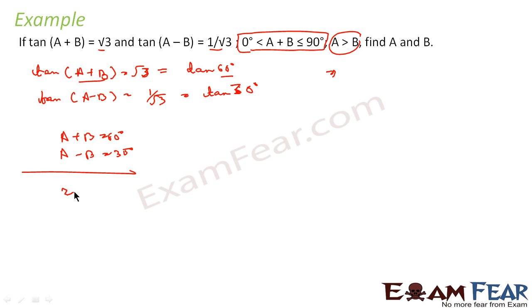If we solve this equation, 2A = 90° or you get A = 45° and B = 15°. So this is my answer and it satisfies the condition also. A + B is less than 90° and A is greater than B. Very simple.